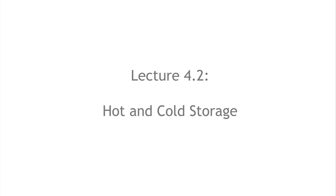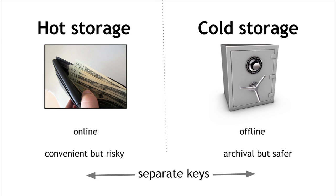In segment 4.2, we'll talk about hot storage and cold storage. Recall that in 4.1, we talked about how to store Bitcoins on your local computer — the equivalent of carrying money around in your wallet or your pocket. The idea of hot and cold storage is that you're going to have some storage which is hot or online, as on your phone or local computer, and as we covered before, storing Bitcoins that way is convenient but also somewhat risky.